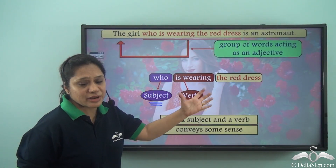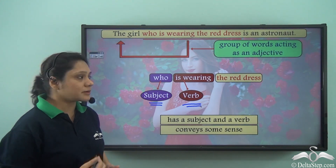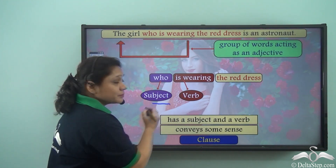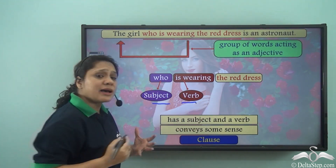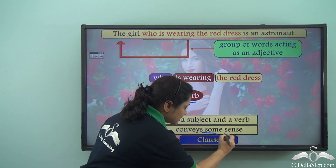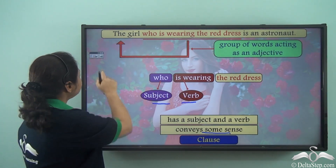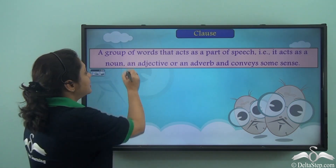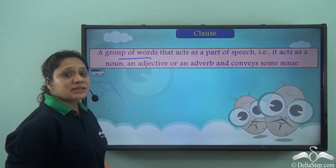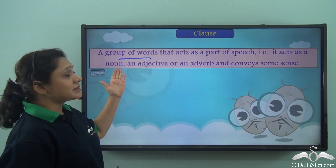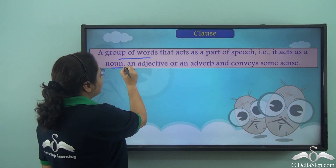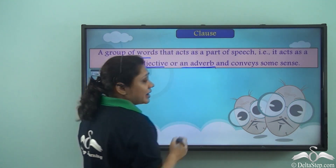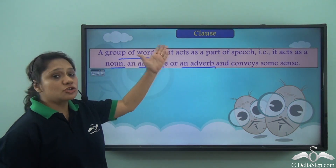Who is wearing the red dress? It has some meaning attached to it. So this group of words which has a subject and a verb and conveys some sense is known as a clause. So what is a clause? A group of words that acts as a part of speech — that is, it acts as a noun, an adjective, or an adverb — and conveys some sense is known as a clause.